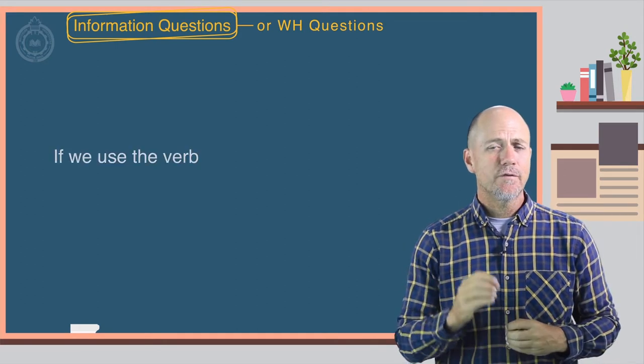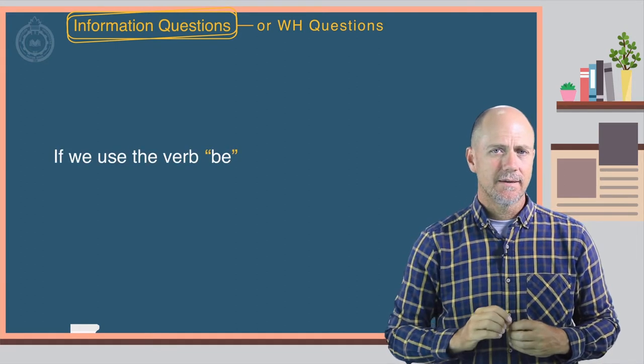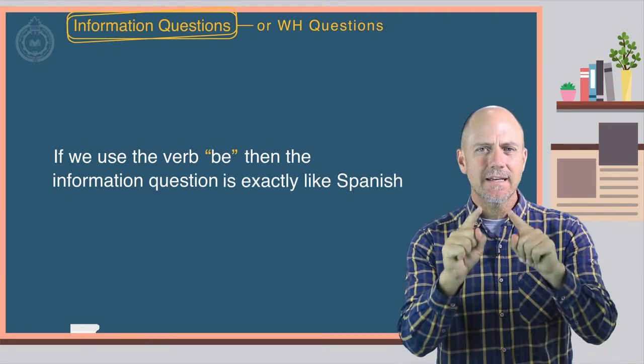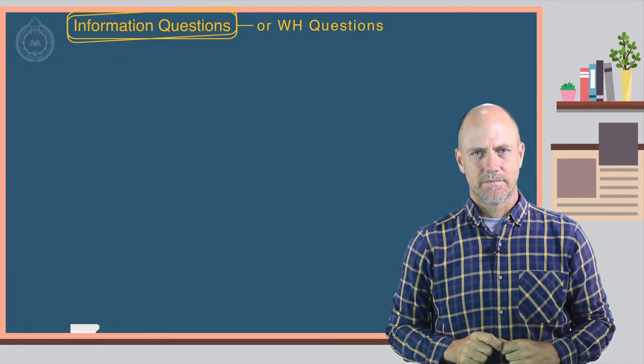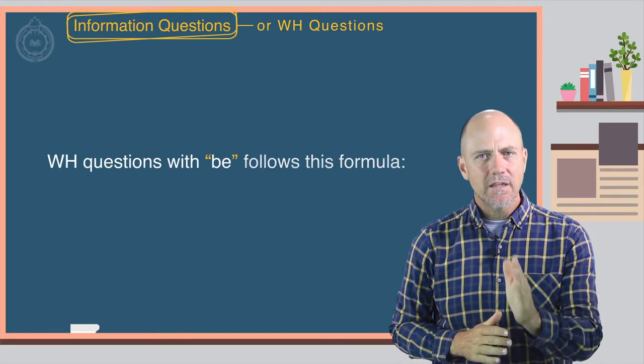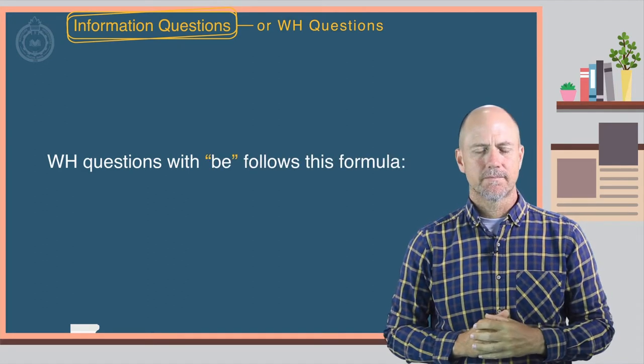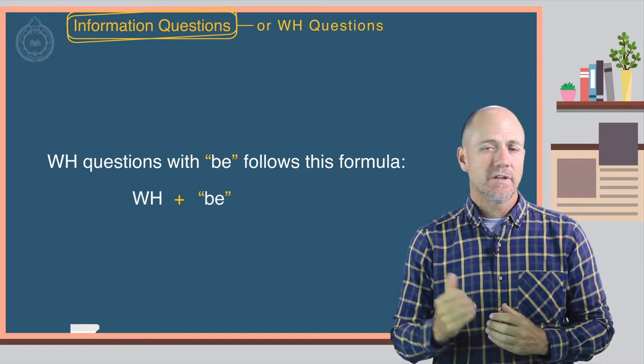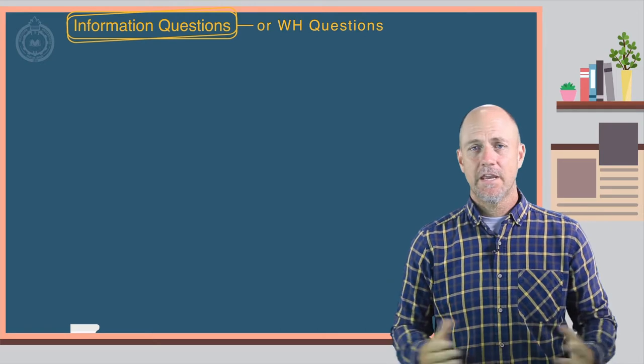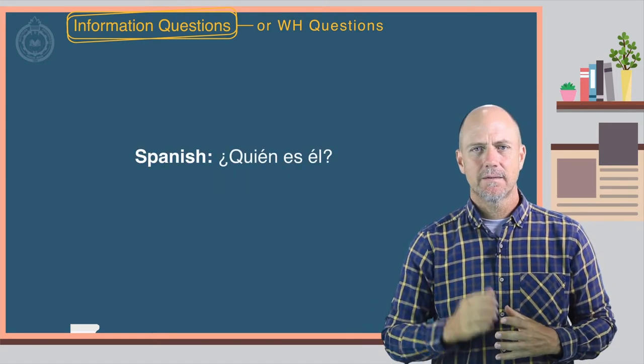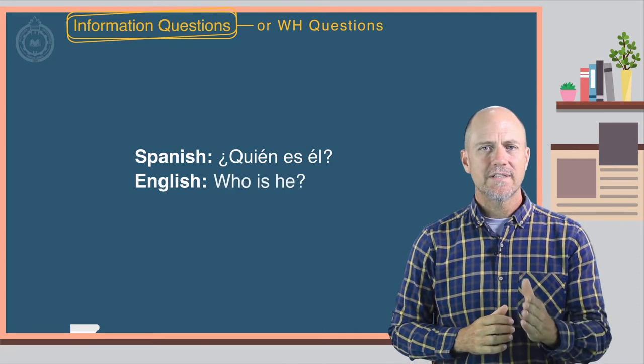Now, if we use the verb be, then the information question is exactly like Spanish. WH questions with be follows this formula: WH plus be plus the subject. Here are some examples. Spanish: ¿Quién es él? English: Who is he?